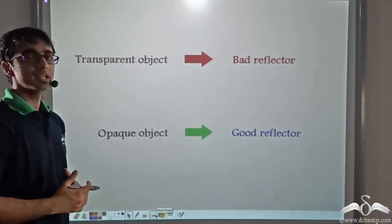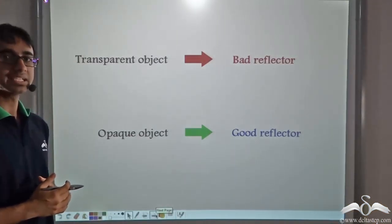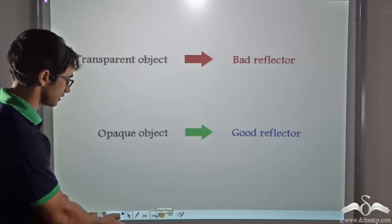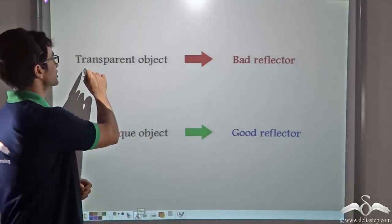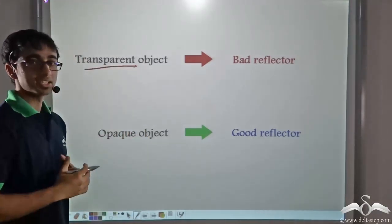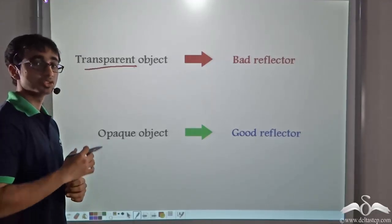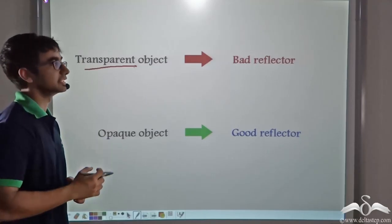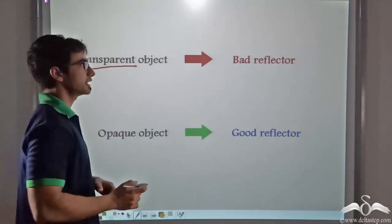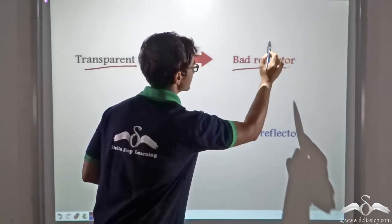Now what did we learn about objects through which light can pass very easily? Such objects are known as transparent objects. Transparent objects are those objects through which light passes very easily and through which we can see very clearly. So clearly transparent objects are bad reflectors.